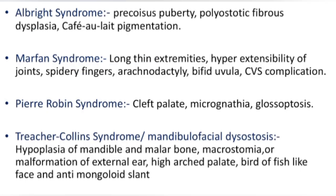Albright syndrome: polyostotic fibrous dysplasia, café-au-lait pigmentation. Marfan syndrome: long thin extremities, hyperextensibility of joints, spidery fingers — arachnodactyly — bifid uvula, and cardiovascular complications.